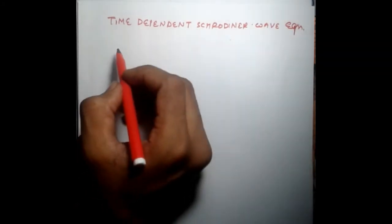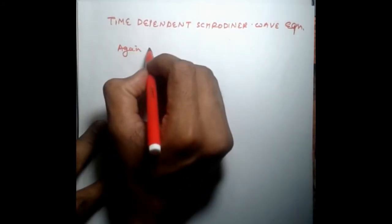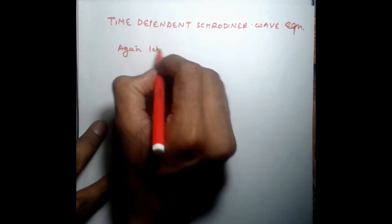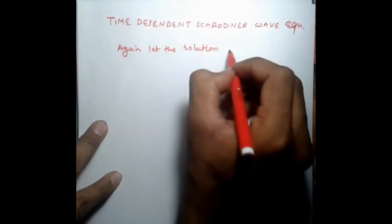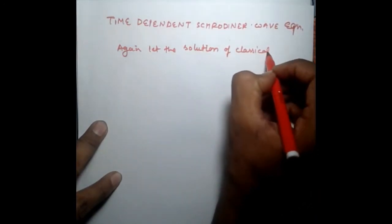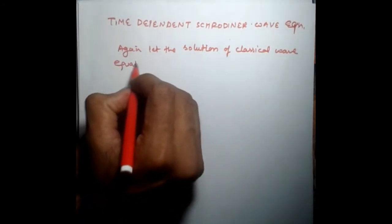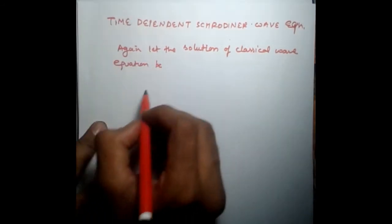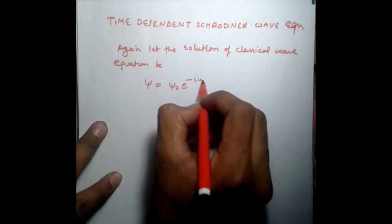Again, let the solution of classical wave equation be ψ = ψ₀e^(-iωt).